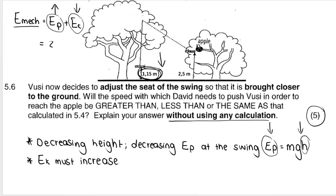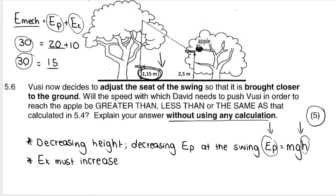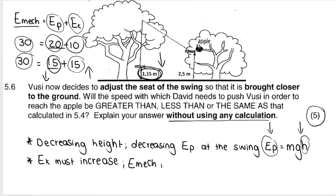To illustrate with numbers: if Ep = 20 and Ek = 10, mechanical energy = 30. If Ep decreases to 15, then Ek must increase to 15 to keep mechanical energy constant at 30. You can see Ep went down and Ek went up. It's very important to mention what stays constant and write the formula Em = Ep + Ek to back up that statement.